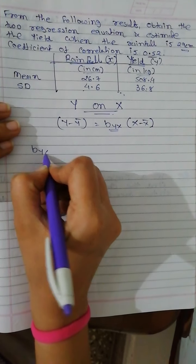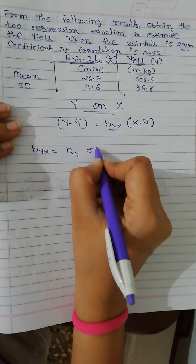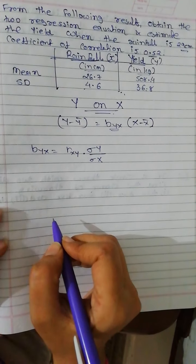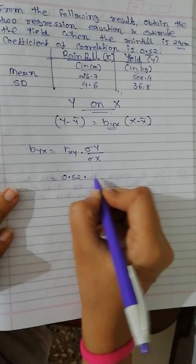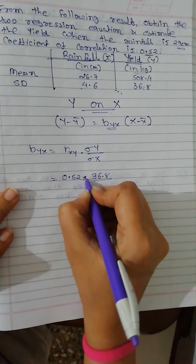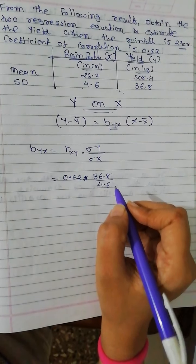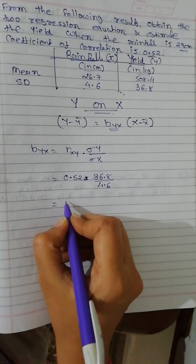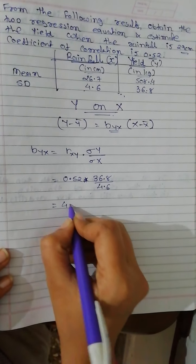I will write the formula: byx equals rxy times standard deviation of y divided by standard deviation of x. So rxy is 0.52 times standard deviation of y is 36.8 divided by 4.6. So byx is 4.16.